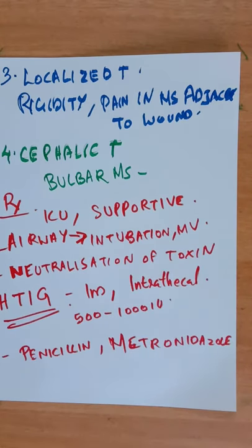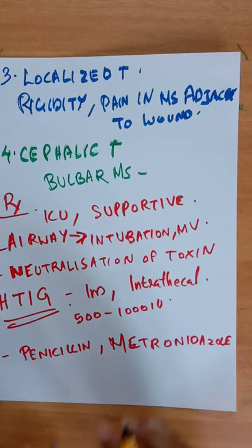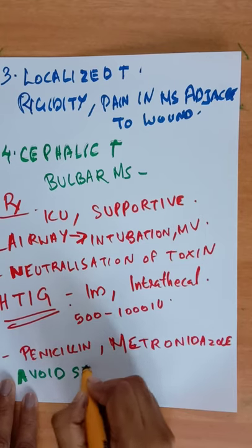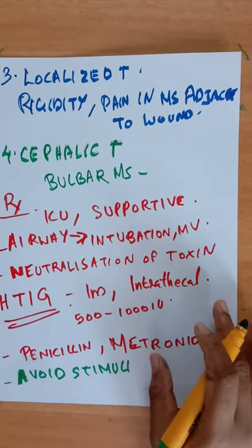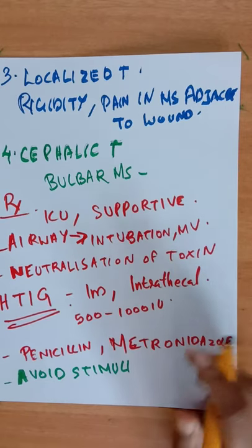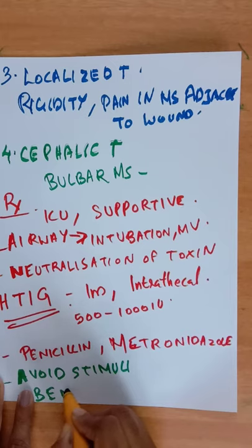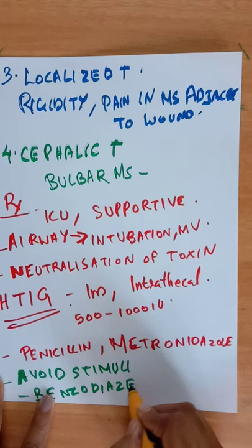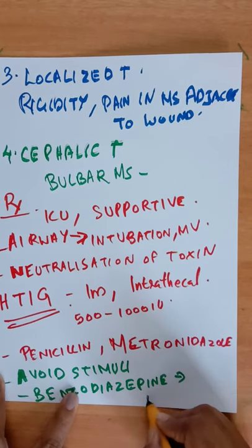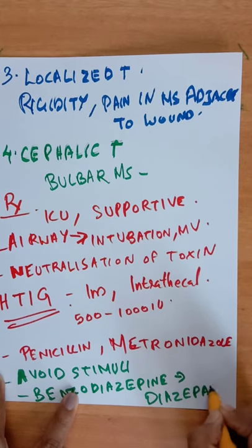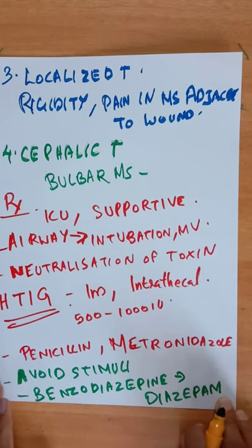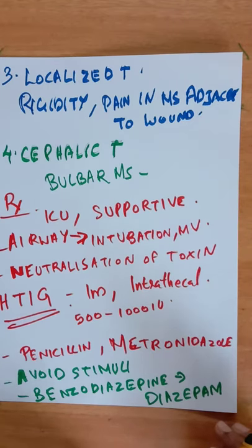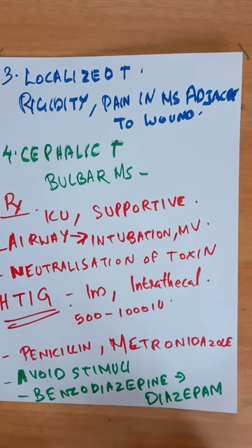Spasms are usually precipitated by minimal stimuli, so try to avoid noxious stimuli like touch, pain, loud noises, bright lights, etc. Benzodiazepines can be used for muscle relaxation and relief of spasms. Most commonly diazepam is used. It can be used either as IV bolus or continuous infusion. Diazepam prevents further spasms by causing GABA mediated central inhibition, and it also helps by reducing anxiety and promoting muscle relaxation.